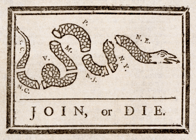The Thirteen Colonies, also known as the Thirteen British Colonies or Thirteen American Colonies, were a group of British colonies on the Atlantic coast of North America founded in the 17th and 18th centuries. They declared independence in 1776 and formed the United States of America. The Thirteen Colonies had very similar political, constitutional, and legal systems and were dominated by Protestant English speakers.